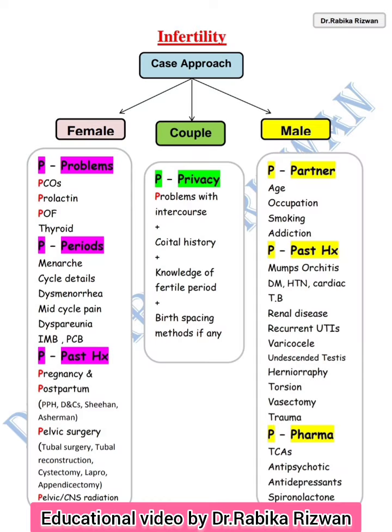P for privacy — privacy is all about coital history. After that, P for past history. In past history, P for pregnancy and postpartum, and P for pelvic surgeries — any kind of pelvic surgeries.